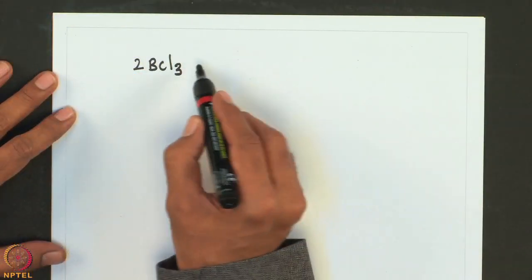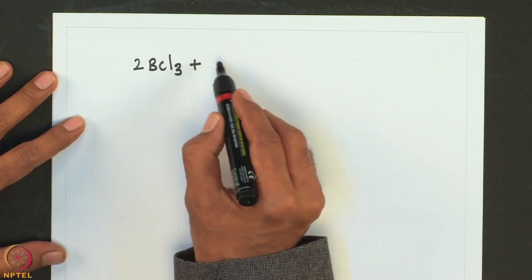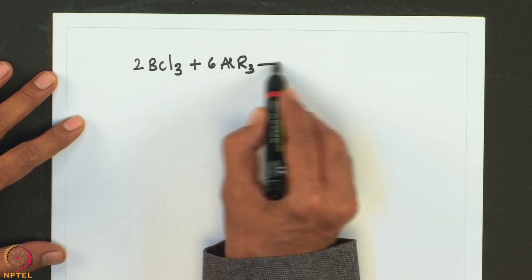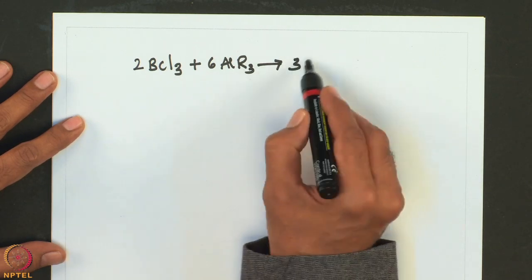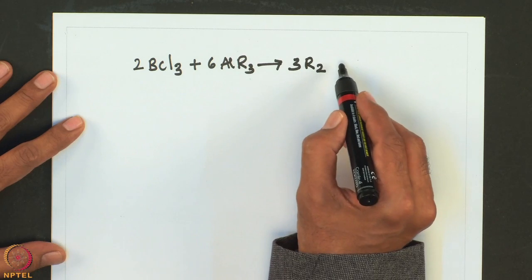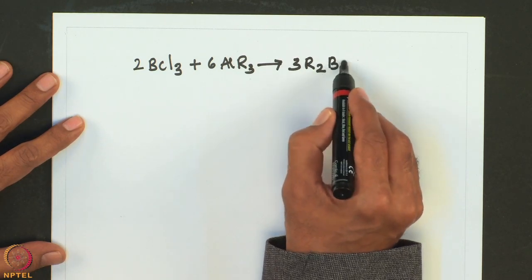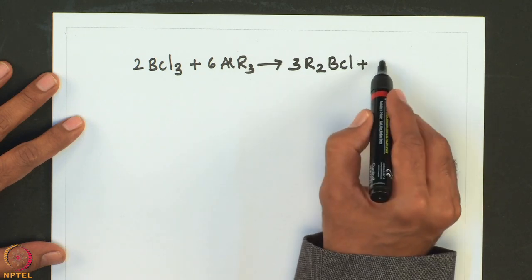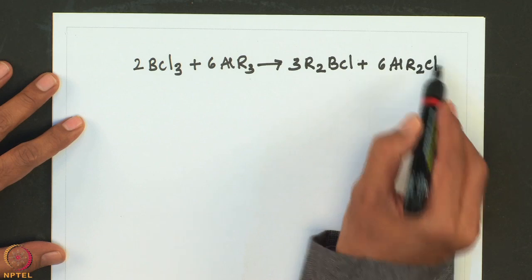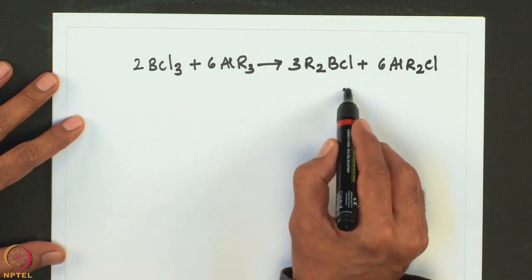Let us look into the preparation of organohalboron compounds, because these compounds are very useful in further derivatization of main group or transition elements. Treatment of BCl3 with trialkyl aluminum leads to alkyl boron chloride — this reaction can also be termed a metathesis reaction.